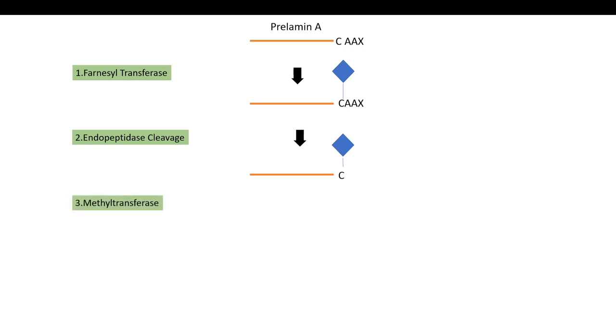Now the cysteine at the C-terminal is farnesylated. In the next step, a methyl transferase recognizes this farnesylated cysteine and attaches a methyl group to the cysteine residue. After this, the events occur in cytoplasm. So farnesyl transferase step, endopeptidase step, methyl transferase step all take place in cytoplasm. After this, the farnesylated and methylated prelamin A is translocated to the nucleus via the nuclear pore complex.